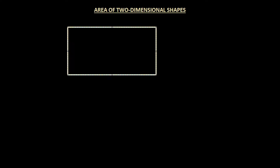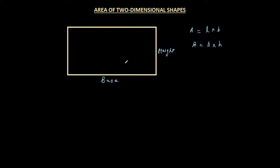You are already aware that the area of a rectangle is nothing but the length times the breadth. The rectangle could be drawn on a piece of paper or it could be a TV screen hanging on the wall. Instead of calling it the length and the breadth, we can call one side the base and the other the height. So the area of a rectangle is base times height, and we are going to understand the areas of other shapes with respect to base times height.